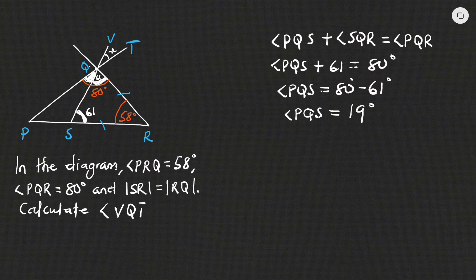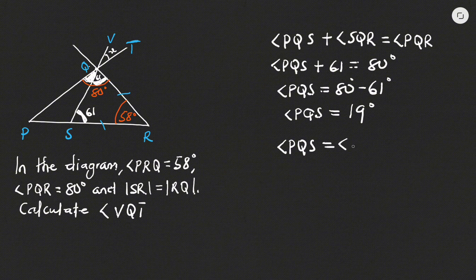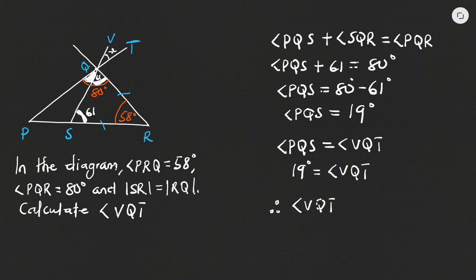The question asks us to find angle VQT. Angle VQT is vertically opposite to angle PQS, so angle VQT equals angle PQS. Since angle PQS is 19 degrees, angle VQT is also 19 degrees.